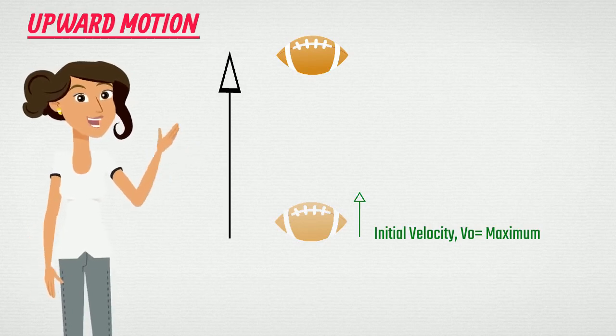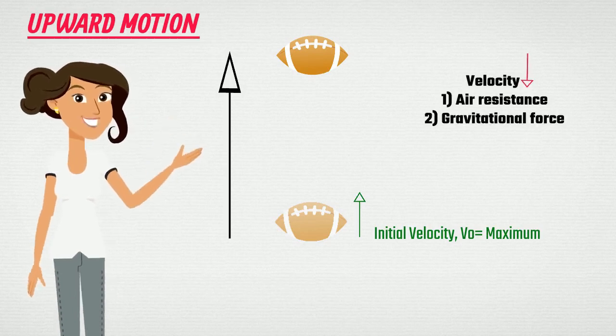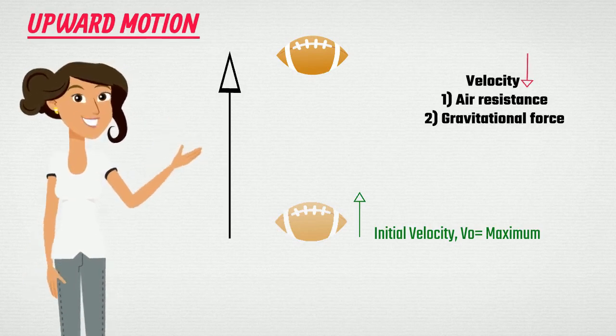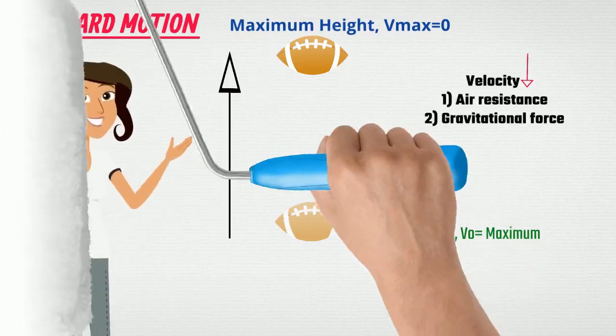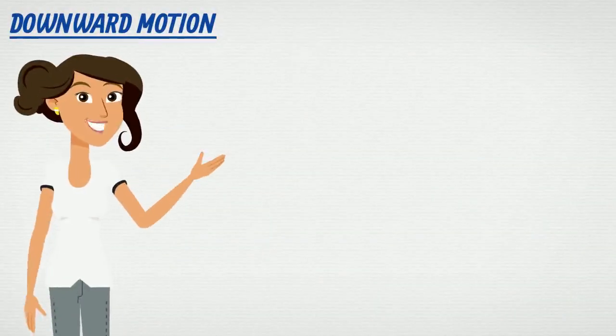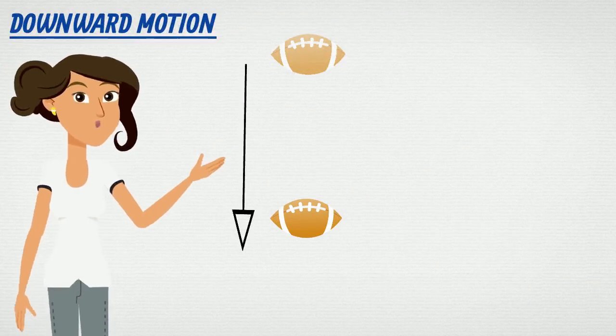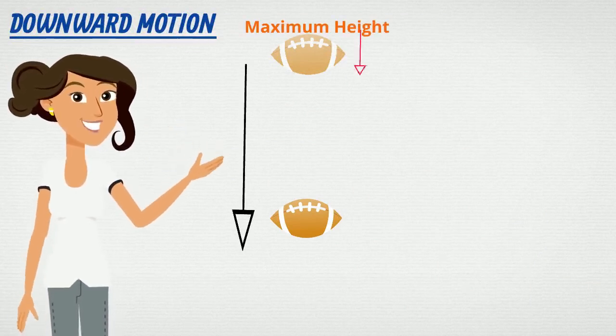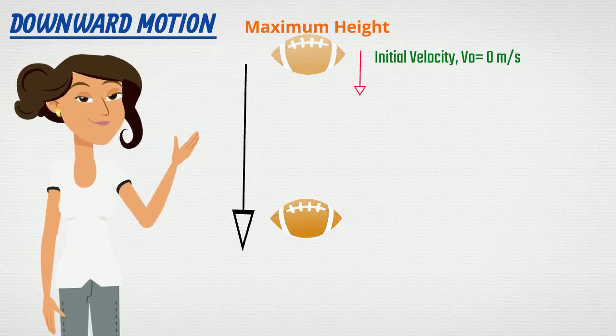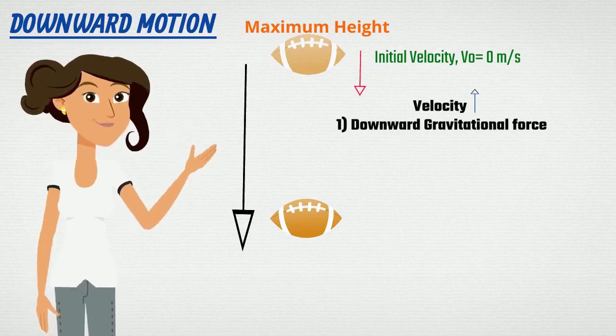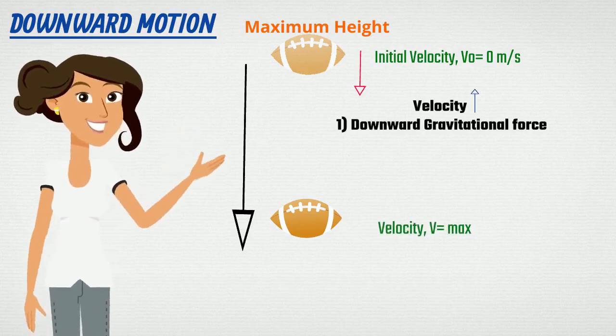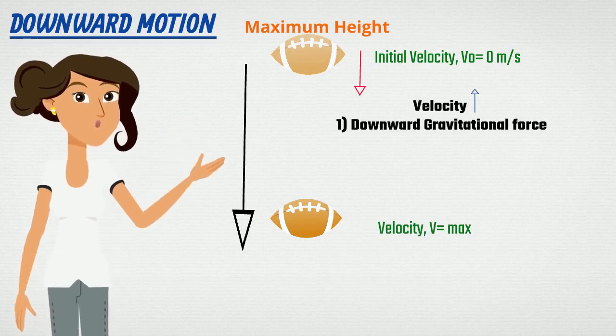Velocity decreases with time as the object gains height, this is due to air resistance and gravity acting on the object. Velocity of the object is zero at maximum height. Then, the object starts to fall downwards. In the downward motion, the initial velocity of the object is zero, velocity of the object increases as the object falls due to downward force of gravity, and the velocity of the object reaches its maximum just before hitting the ground.